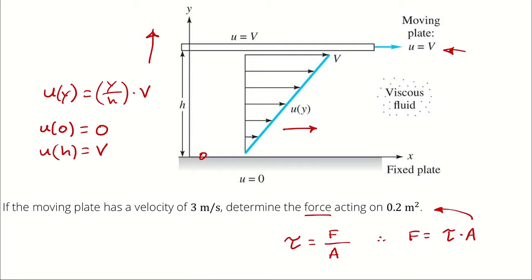So if you're halfway up, that is half of h over h, then your velocity is half of v. Does that make sense?